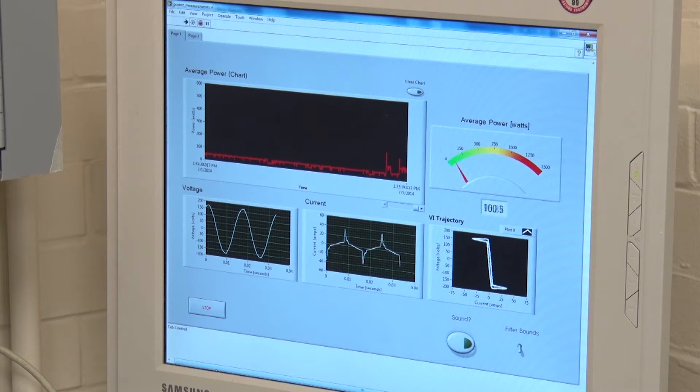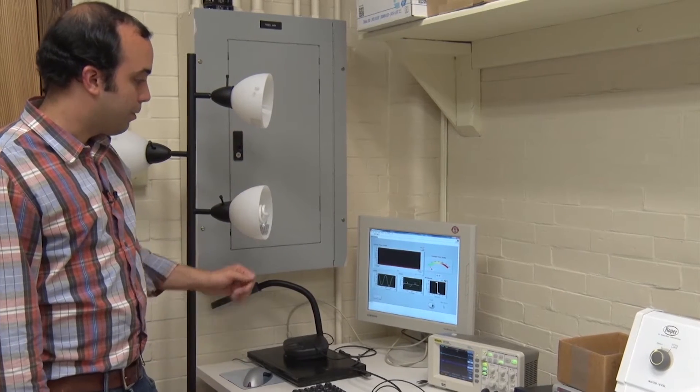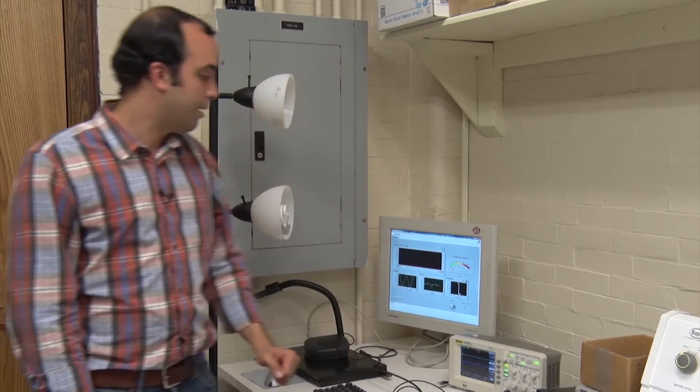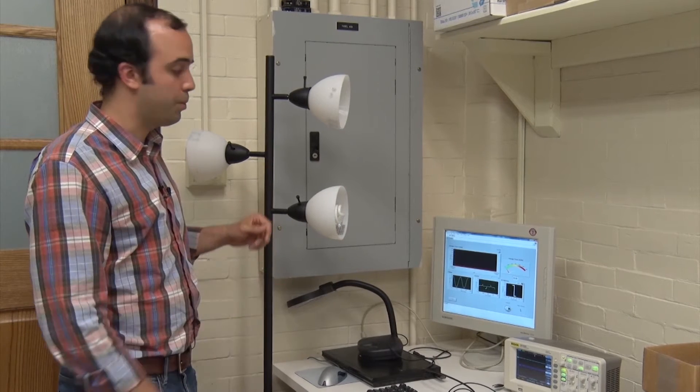On the bottom left, we can see the voltage. We can see then the current and this VI trajectory, which is basically just voltage and current plotted in one single graph. And what you can see from there is that this particular shape is corresponding to what is happening right now, which is just the computer charger.